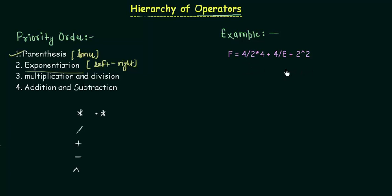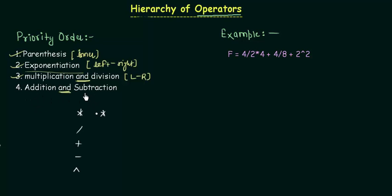Then we will do multiplication and division. Here there is an 'and', which means the priority of multiplication and division is equal. In this case also we move from left to right — whichever appears on the left will be solved first. The last one is addition and subtraction; again there is 'and', meaning addition and subtraction have the same priority, also evaluated left to right.